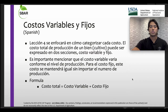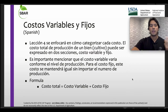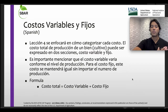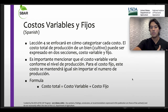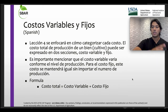Tenemos los costos variables y los fijos. In this lesson number 4, we are going to focus on how to categorize each cost. The total cost of production of a good, in this case a crop, can be expressed in two sections: variable cost and fixed costs.